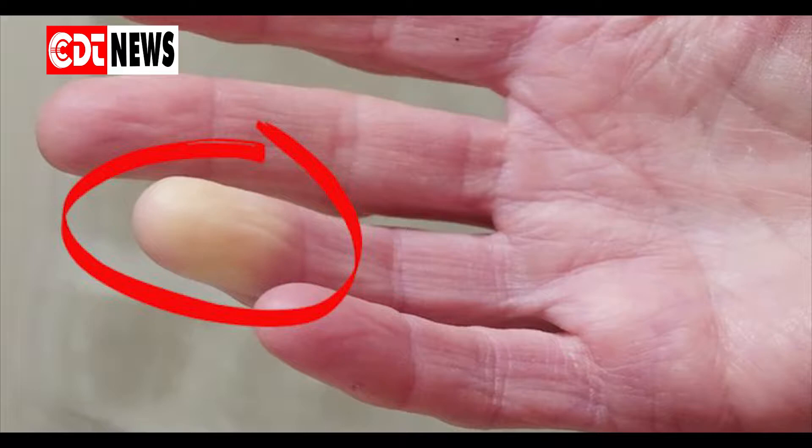Usually, these Raynaud's symptoms dissipate within 15 minutes, when your blood flow becomes normal again and your extremities have begun to return to normal temperature.